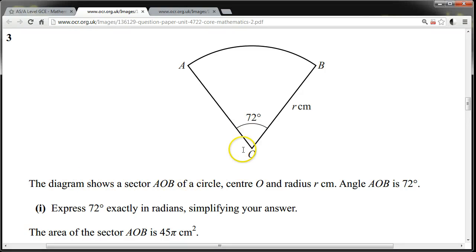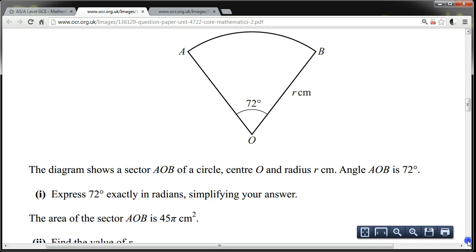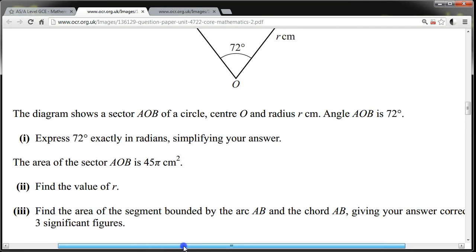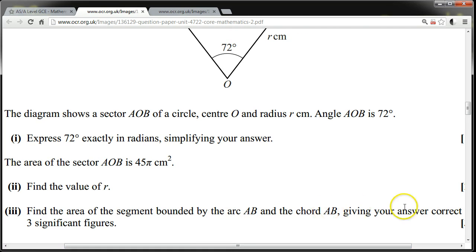The diagram shows a sector AOB of a circle center O and radius R. Angle AOB is 72 degrees. Express 72 degrees exactly in radians, simplifying your answer. The area of the sector AOB is 45 pi centimeters squared. Find the value of R. Find the area of the segment bounded by the arc AB and the chord AB, giving your answer correct to three significant figures.